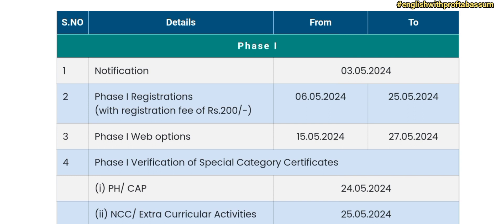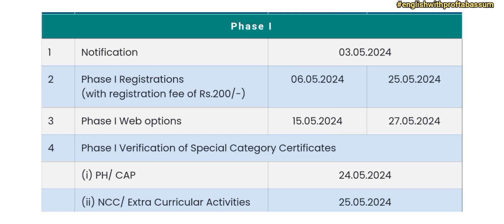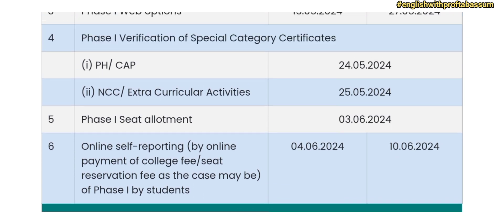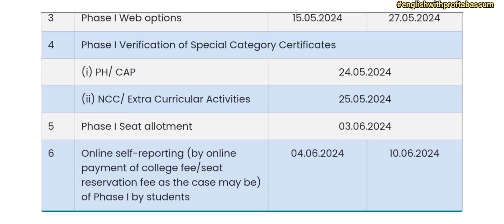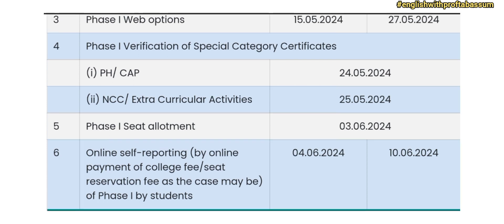Phase 1 verification and special category certificates — that are physically handicapped or NCC category students — will happen on 24th and 25th May. Phase 1 seat allotments start from 3rd June 2024. Online payment of college fee and self-reporting will be between 4th June and 10th June. This was about phase 1.